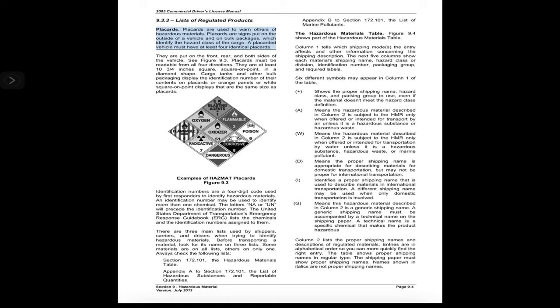Section 9.3.3: Placards are used to warn others of hazardous materials. Placards are signs put on the outside of a vehicle and on bulk packages which identify the hazard class of the cargo. A placarded vehicle must have at least four identical placards placed on the front, rear, and both sides of the vehicle. Placards must be readable from all four directions, at least 10¾ inches square, in a diamond shape. Cargo tanks and other bulk packaging display the identification number of their contents on placards or orange panels.